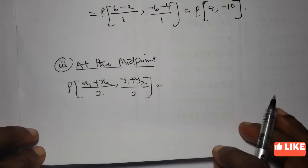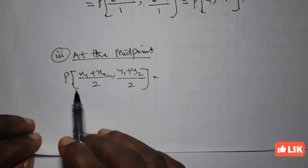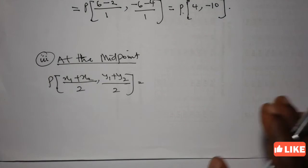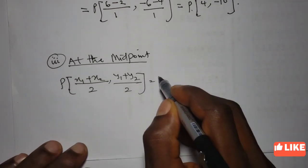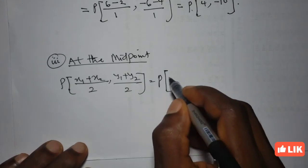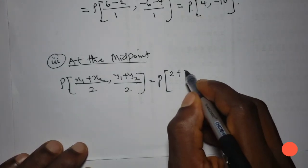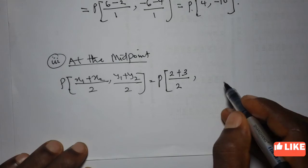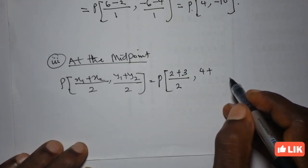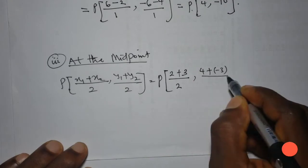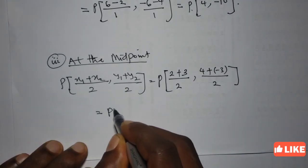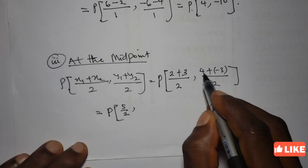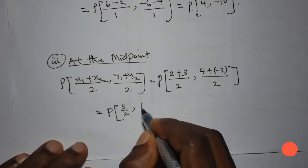The last part is the midpoint. If point P is at the middle of the line segment, using the midpoint formula: X = (X1 + X2) / 2 = (2 + 3) / 2 = 5/2, and Y = (Y1 + Y2) / 2 = (4 + (-3)) / 2 = 1/2. So the midpoint is (5/2, 1/2).